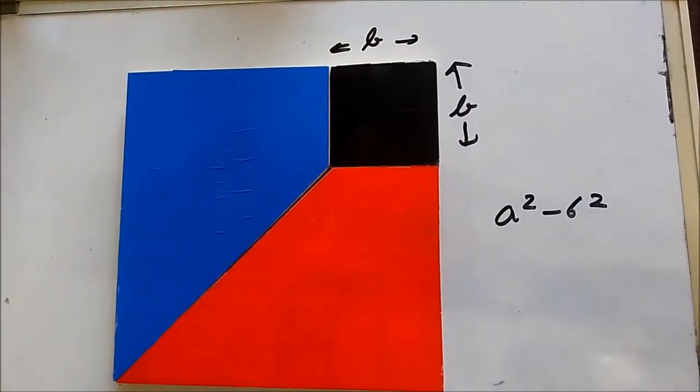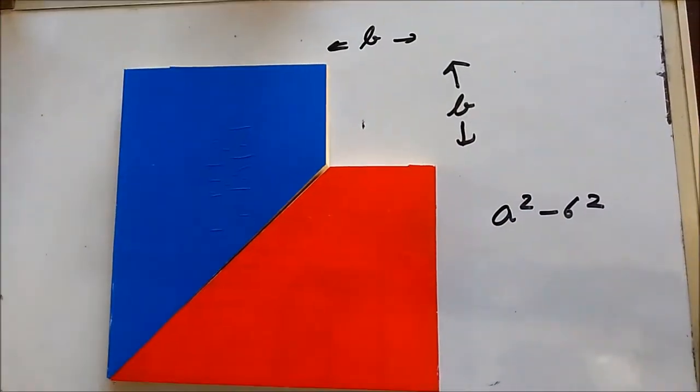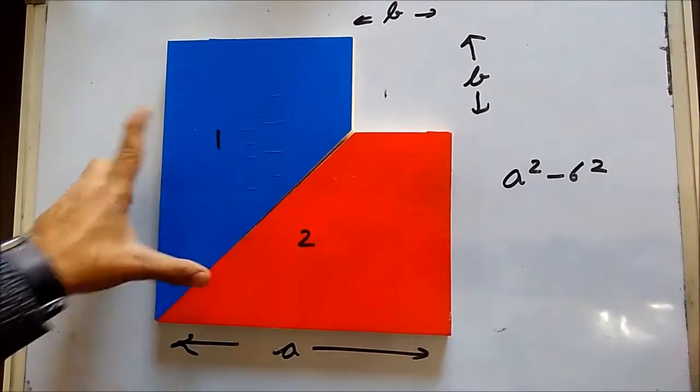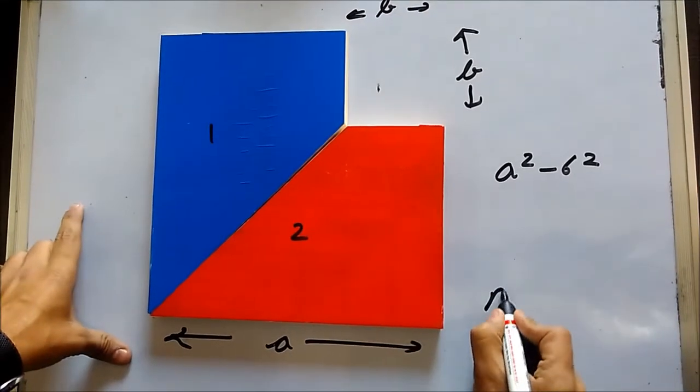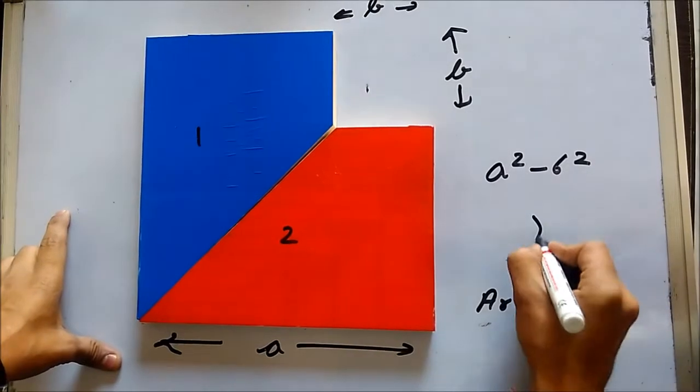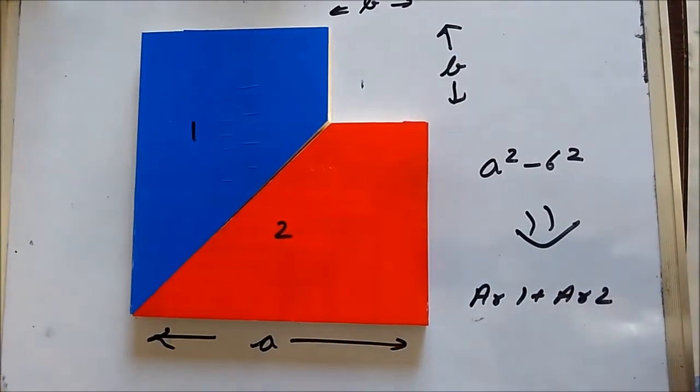So for subtracting it, I'll simply remove this one. Now we are left with these particular figures, this one and two. The area of one plus area of two will be equal to a square minus b square.